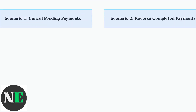There are two main scenarios when dealing with payment issues on the Capitec app. First, cancelling pending or scheduled payments, which is straightforward. Second, reversing completed payments, which requires a dispute process.